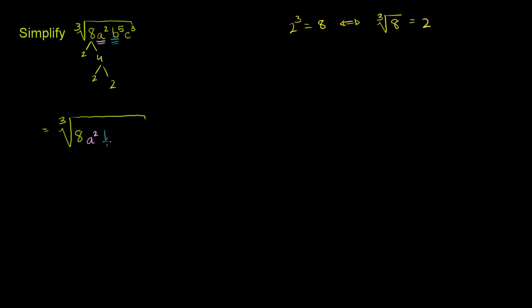For b⁵, I can write that as b to the third power times b². That way I have a perfect cube here, and then I have something that's not, but this at least I can take the cube root of. And then c to the third—that's already a perfect cube. The cube root of that is c.